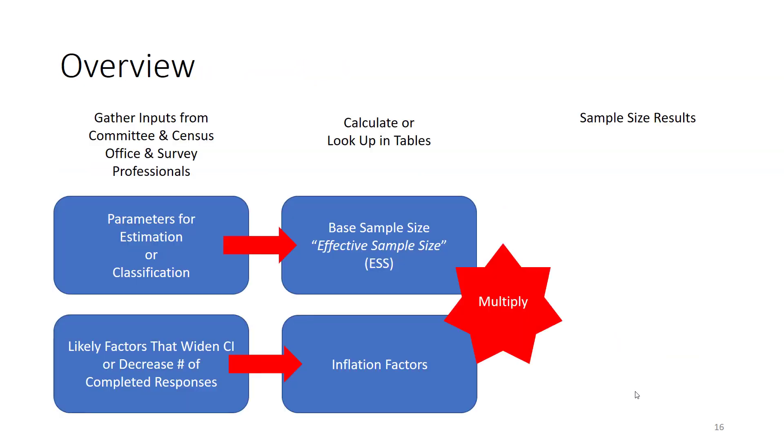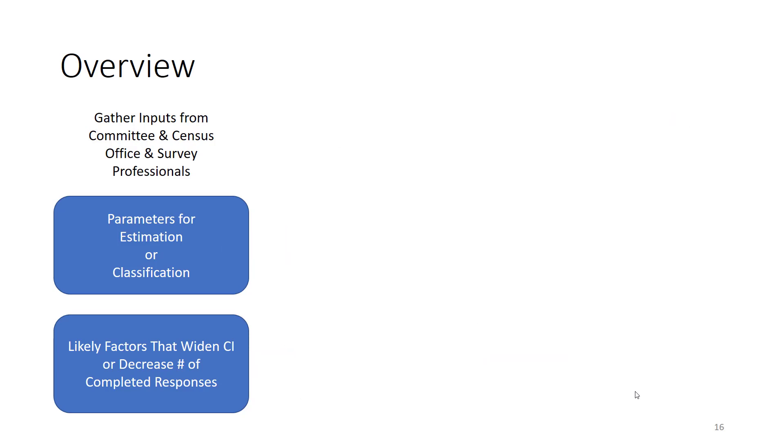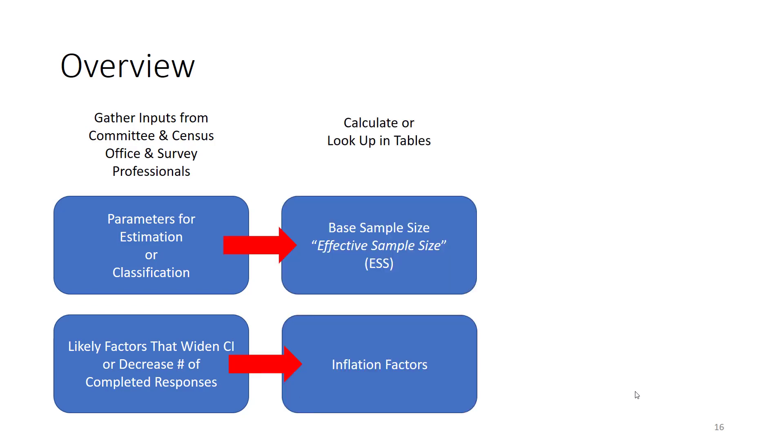Here's the same thing displayed graphically. We're going to gather some inputs from the committee, from the census office and survey professionals. We're going to ask what level of precision do they need and what are some of the factors in this country in context that might decrease our number of completed responses and we'll use that to look up in some tables or calculate with equations.